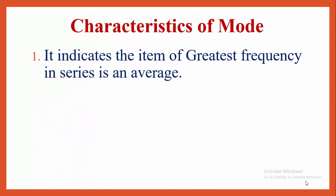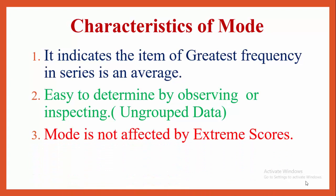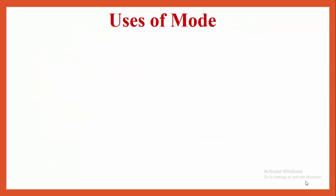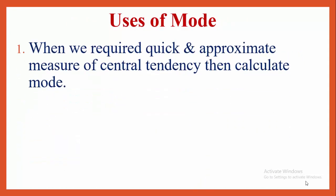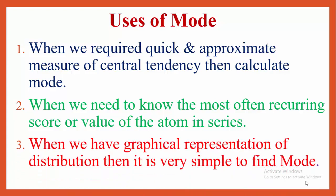Characteristics of mode: it indicates the item of greatest frequency in a series; it is an average. It is easy to determine by observing or inspecting when ungrouped data is given. Mode is not affected by extreme scores. It is easy to understand. Uses of mode: when we require a quick and approximate measure of central tendency, calculate mode. When we need to know the most often recurring score in a series, or when we have a graphical representation of a distribution, it is very simple to find the mode.